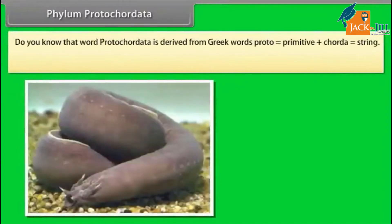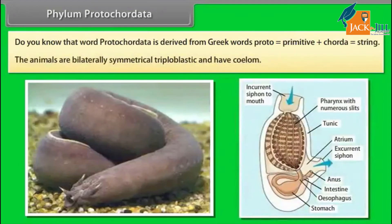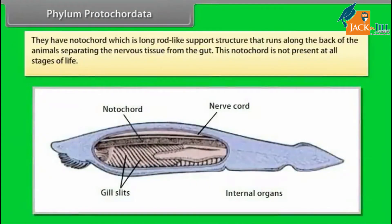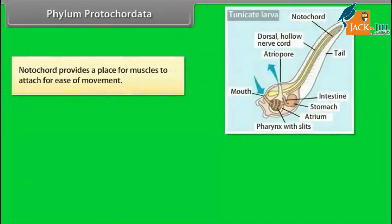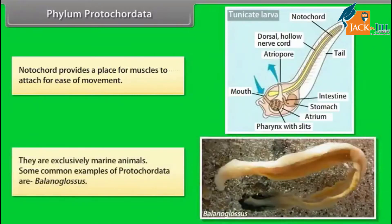Phylum Protochordata. The word protochordata is derived from Greek words proto, meaning primitive, plus corda, meaning string. The animals are bilaterally symmetrical, triploblastic, and have a coelom. They have a notochord, which is a long rod-like support structure that runs along the back of the animal, separating the nervous tissue from the gut. This notochord is not present at all stages of life. It provides a place for muscles to attach for ease of movement. They are exclusively marine animals. A common example is Balanoglossus.